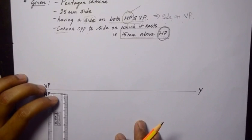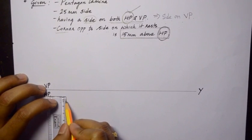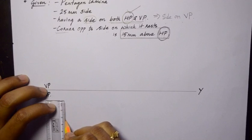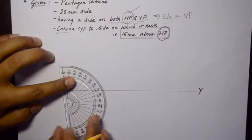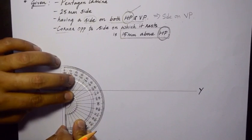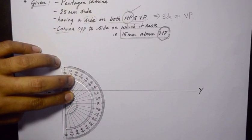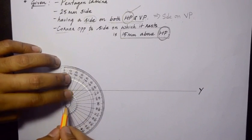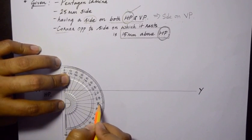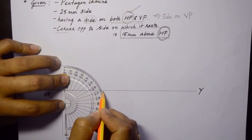So let us draw a pentagon on the horizontal plane such that the side is on the left. Draw one side first on the left side of 25 mm. Leave some space because the pentagon should not overlap with the XY line. Keep the protractor at these two points and mark 108 degrees, because the interior angle of a pentagon measures 108 degrees. So if you keep this as a reference point, you can count from this side for 108 — so here we have 90, 100, 110, and this should be 108.